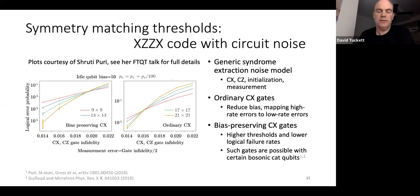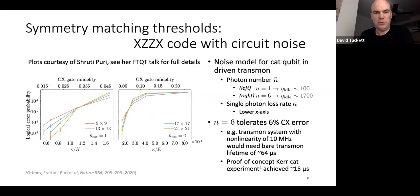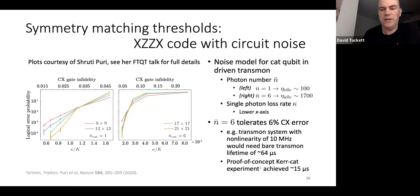Also from Shruti's talk: they modeled a noise model for a cat qubit in a driven transmon. For a transmon of photon number six, you can tolerate CNOT gate errors of 6%. With a transmon nonlinearity of about 10 MHz, you'd need a transmon lifetime of about 64 microseconds; they've already had a proof-of-concept experiment at 15 microseconds, so this looks very achievable.